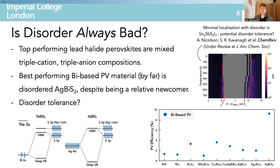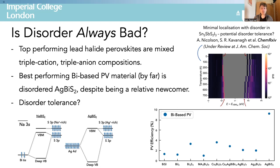Before I finish, I'd like to pose a general question from these works: is disorder universally bad for solar cell performance? Conventionally, material scientists have tried to avoid it as it kills performance in conventional materials like silicon, cadmium telluride and gallium arsenide. However, the top-performing lead halide perovskites today are mixed triple-cation triple-anion compounds with a huge amount of compositional disorder at various length scales. Similarly, the best-performing bismuth-based photovoltaic material is this disordered silver bismuth sulfide, despite being a relative newcomer in the field. These results show that disorder is not necessarily universally bad — the nature of the disorder and its impact on electronic properties are of key importance.